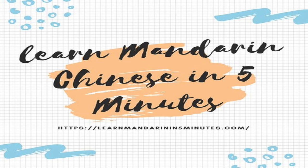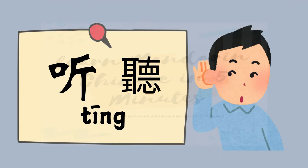Hello, Language Learners! Welcome back to Learn Mandarin Chinese in 5 Minutes YouTube Channel. Today, we are diving deep into one of the most common and surprisingly complex Chinese characters, Ting. If you are learning Mandarin, you have probably encountered this word a lot. But did you know that depending on the context, Ting can mean so much more than just listen? Understanding them is key to mastering Chinese. Stick around because by the end of this video, you will be using these words like a native speaker.